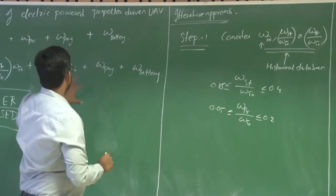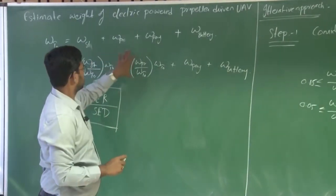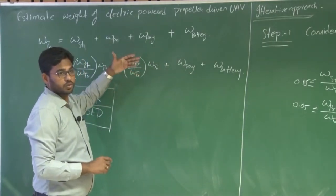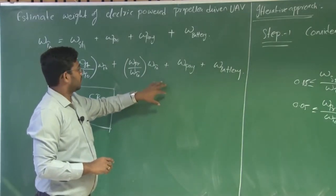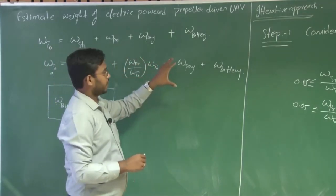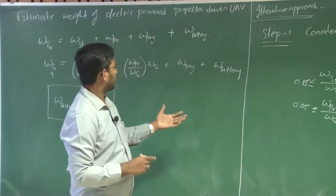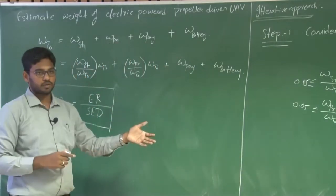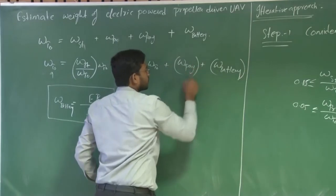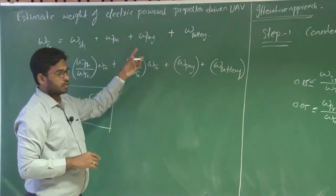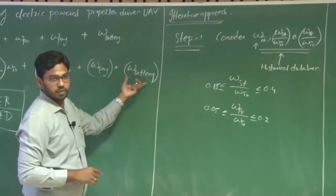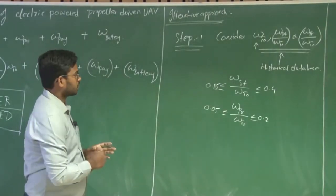By doing so, we use this equation that represents exactly the same weight estimation of the previous UAV. What we have to do is bring this equation to the current UAV, current mission. Initially, you know the payload and the mission requirement. That means this payload is known. Using these parameters, you get to know what is the battery weight. From this, you can estimate an initial idea of the battery weight, where W payload is an input from the mission requirements.